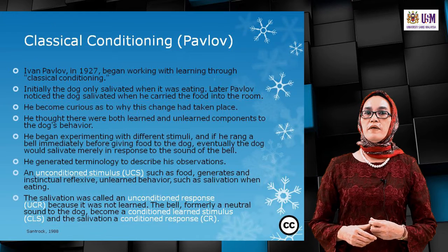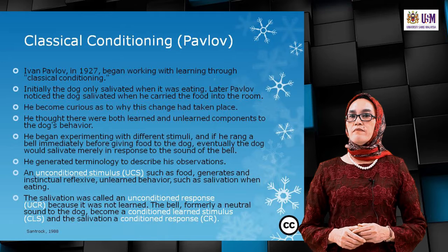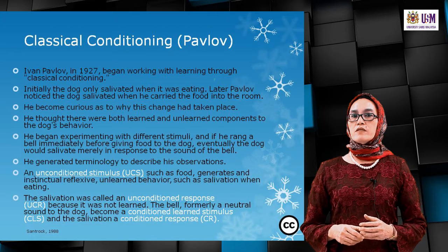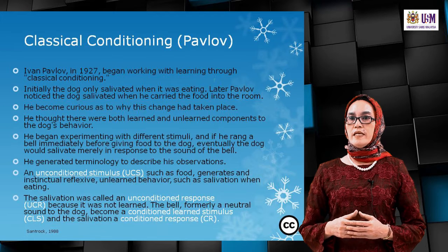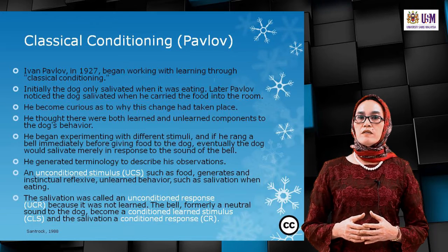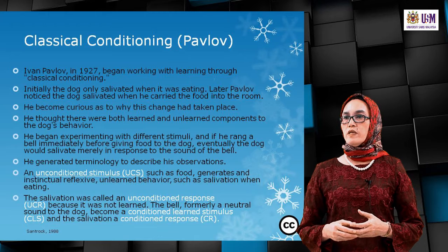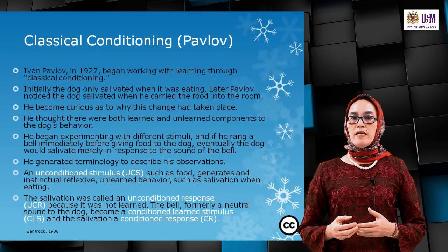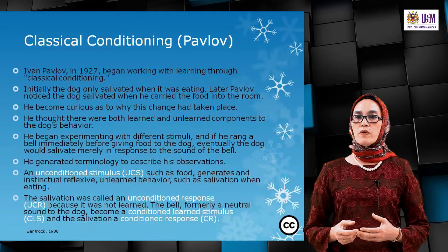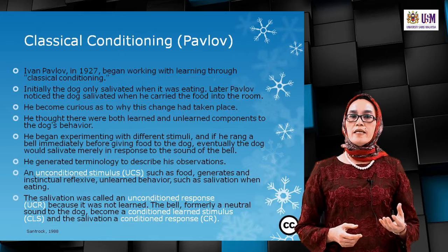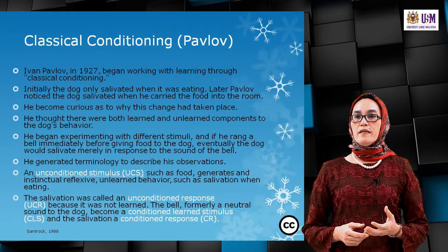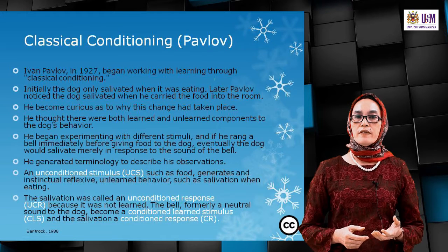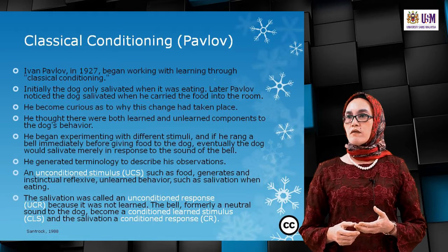Classical conditioning was developed by Ivan Pavlov in 1927. Initially, a dog only salivated when eating. Pavlov noticed the dog salivated when he carried food into the room, making him curious about this change. He thought there were both learned and unlearned components to the dog's behaviour, and began experimenting with different stimuli — ringing a bell immediately before giving food, until eventually the dog salivated merely at the sound of the bell.